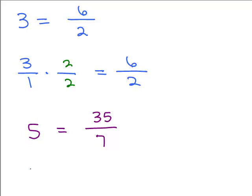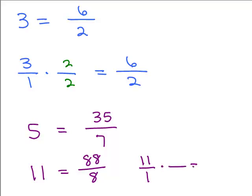Why don't you try this one — how about the number 11? Write 11 as a fraction with a denominator of 8. 8 times 11 is 88. Is 88 divided by 8 equal to 11? Yes. You may also have written 11 as 11 over 1, then multiplied top and bottom by 8 to get 88 over 8.